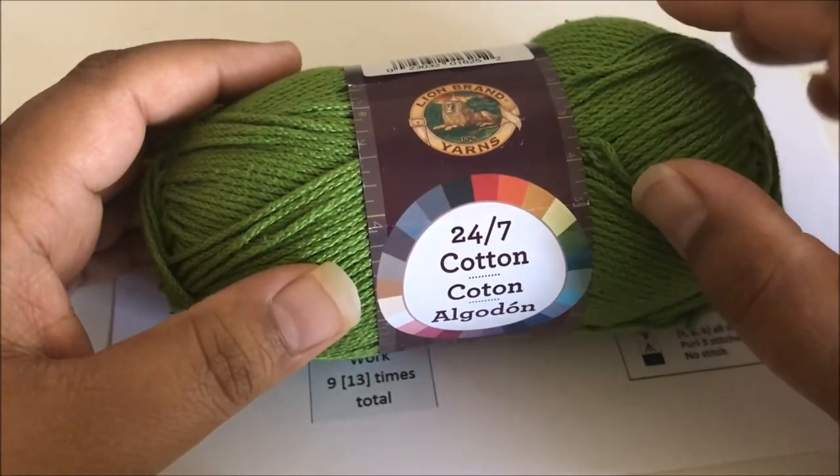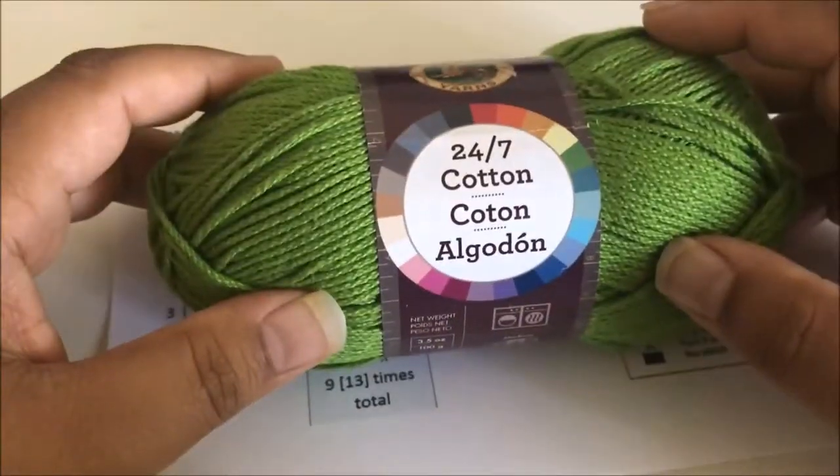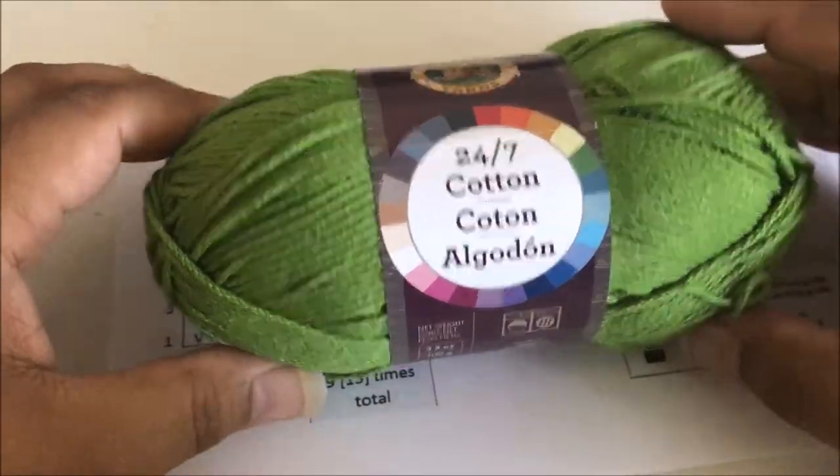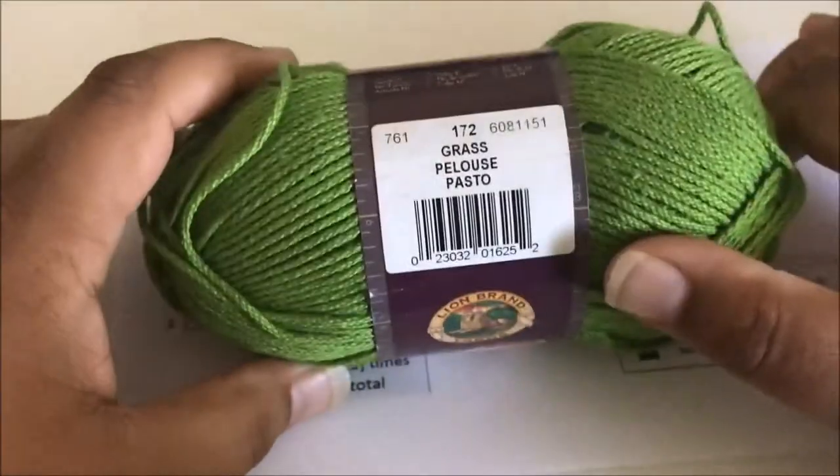Sometimes Trinity Stitch is also called Raspberry Stitch. So today I'm working with Lion Brand 24-7 Cotton, which they were nice enough to give me for free for the pattern, and I'm using the Grass Colorway, which is this beautiful green.